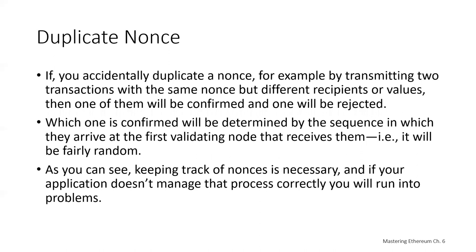If you accidentally duplicate a nonce — for example by transmitting two transactions with the same nonce but different recipients or values — one will be confirmed and one rejected, determined by which arrives first at the validating node, making it fairly random. This can happen when multiple clients handle the same address. Keeping track of nonces is necessary for wallets and clients. If an application doesn't manage the nonce process correctly, problems will arise — though wallet and Ethereum client builders primarily handle this.